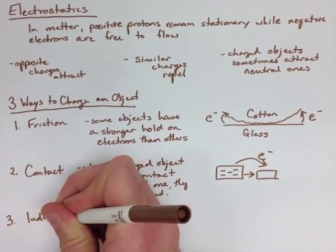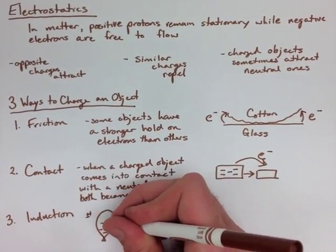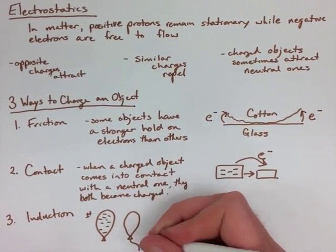And then finally, induction, which is charging without contacting something. So if we have two balloons, we have a negative one and a neutral one attached to a wire, though, that's attached to the ground.